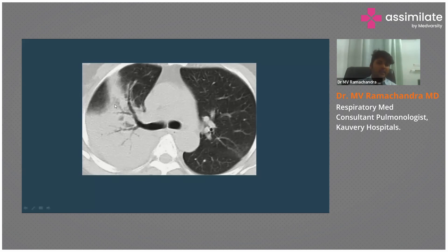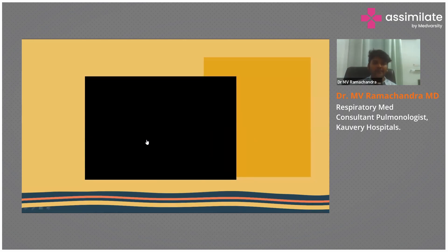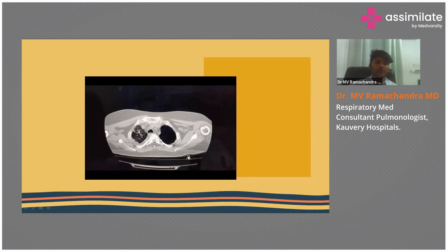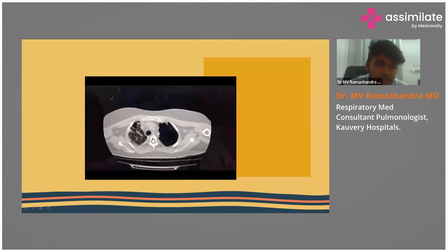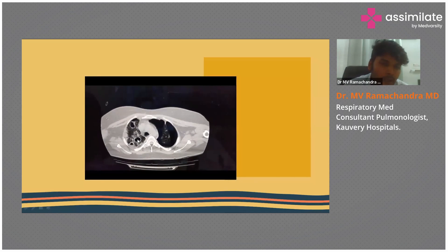Air bronchograms on CT look like patent bronchi within the consolidation — the airway component is clearly visible. This is a video of a post-COVID patient who had multiple cavities in the right lung, and on the left side there is a pneumothorax.